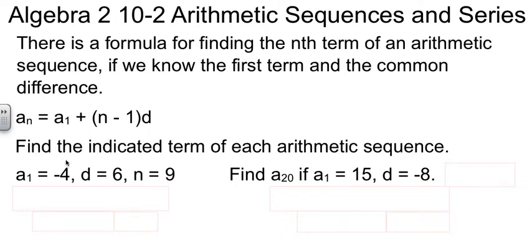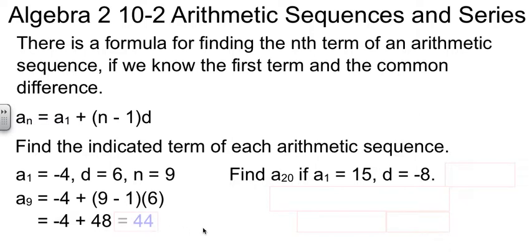They can ask us to find terms using this formula in a couple of different ways. The first way is they just give it to us straight up all the information we need. We know a1, we know d, we know n. So all we have to do is plug into the an equation, plug the values in that we know, do a little arithmetic, and we find out that the ninth term in the sequence, a9, is equal to 44.